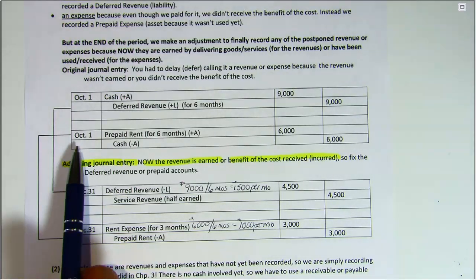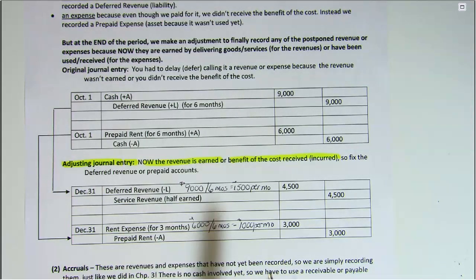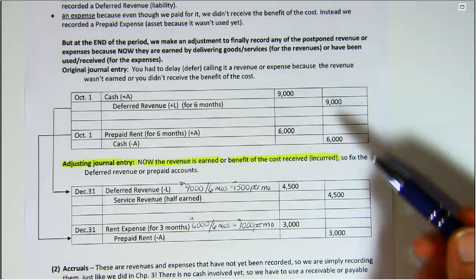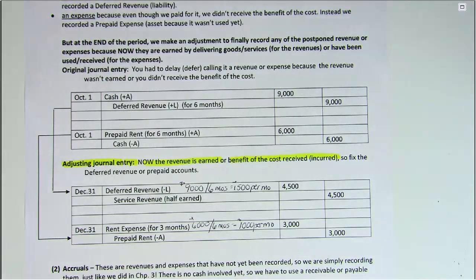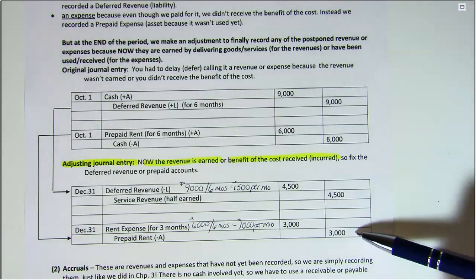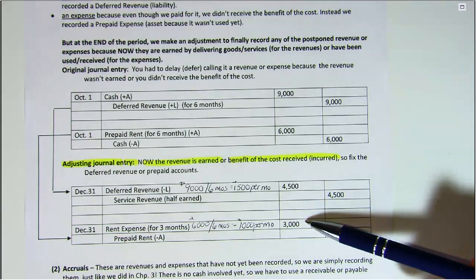And between October 1st and December 31st, three full months have passed, so we multiply the $1,000 per month times three and reduce the prepaid rent account by crediting $3,000. And because we've used it up, it has now become an expense — a rent expense.